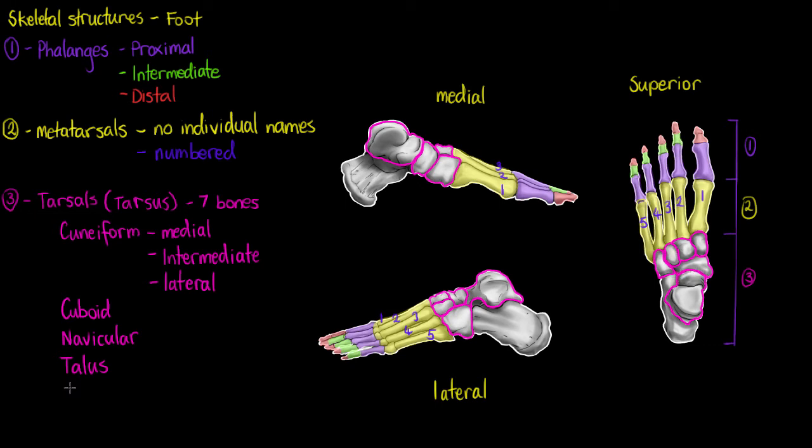Our last tarsal bone is going to be the calcaneus. The calcaneus, as we can see on the drawings, is by far the largest of our tarsals. And it's going to have a lot of attachment points. So I've outlined it on the medial and our lateral surfaces here now, and just on our superior as well.